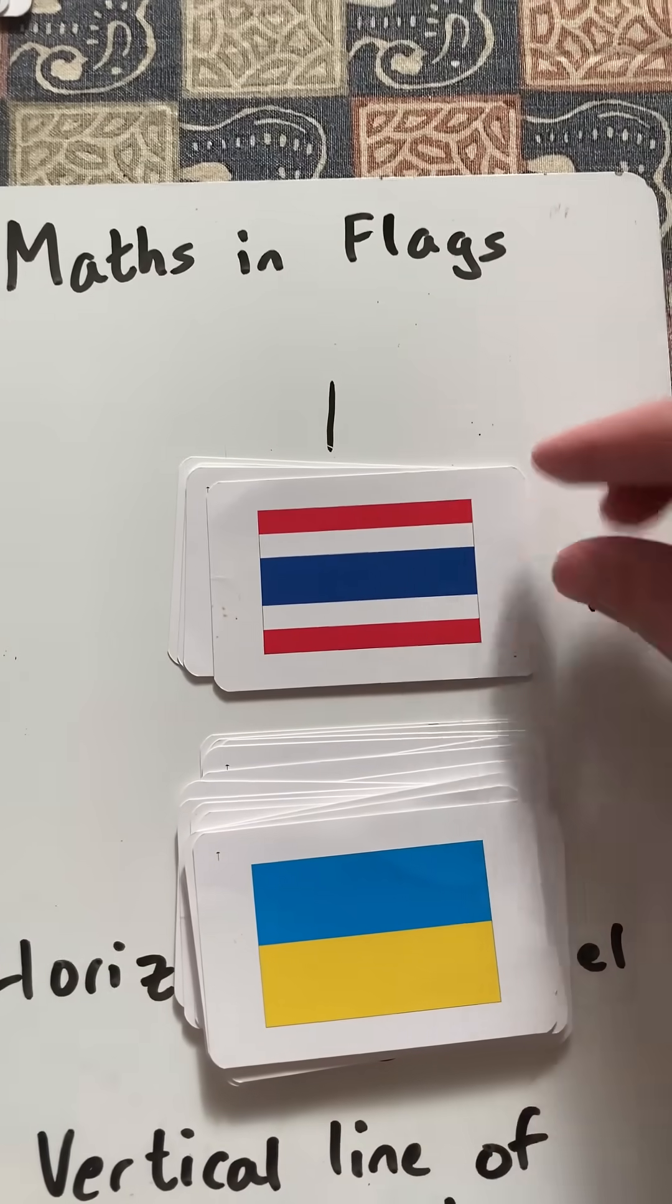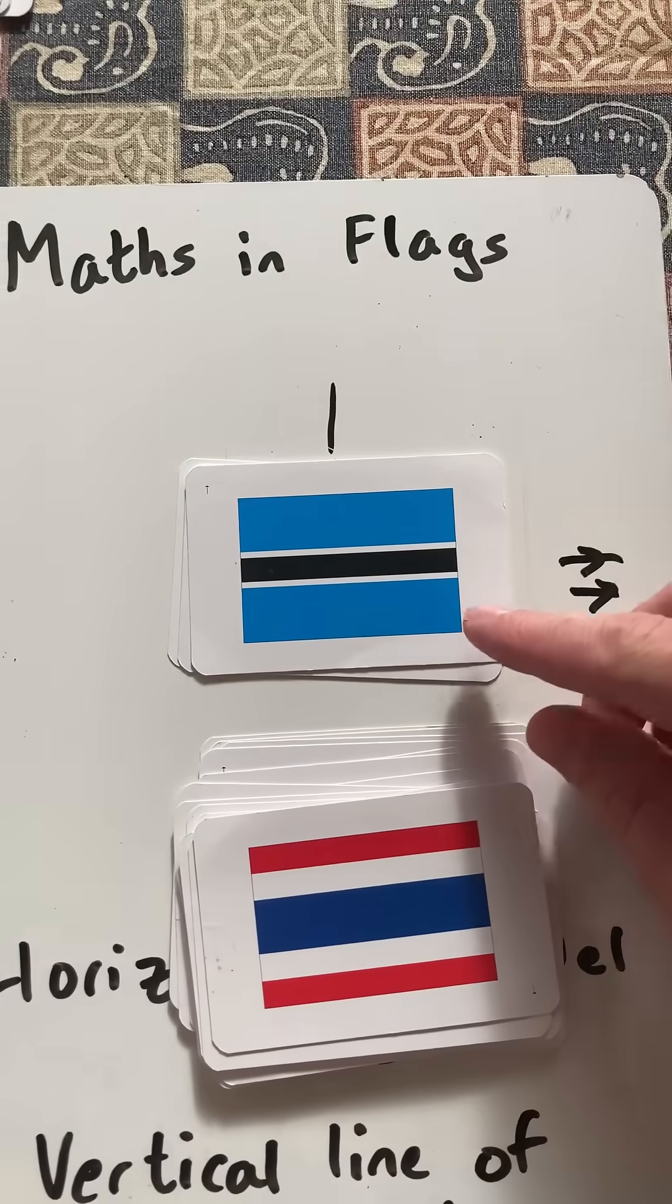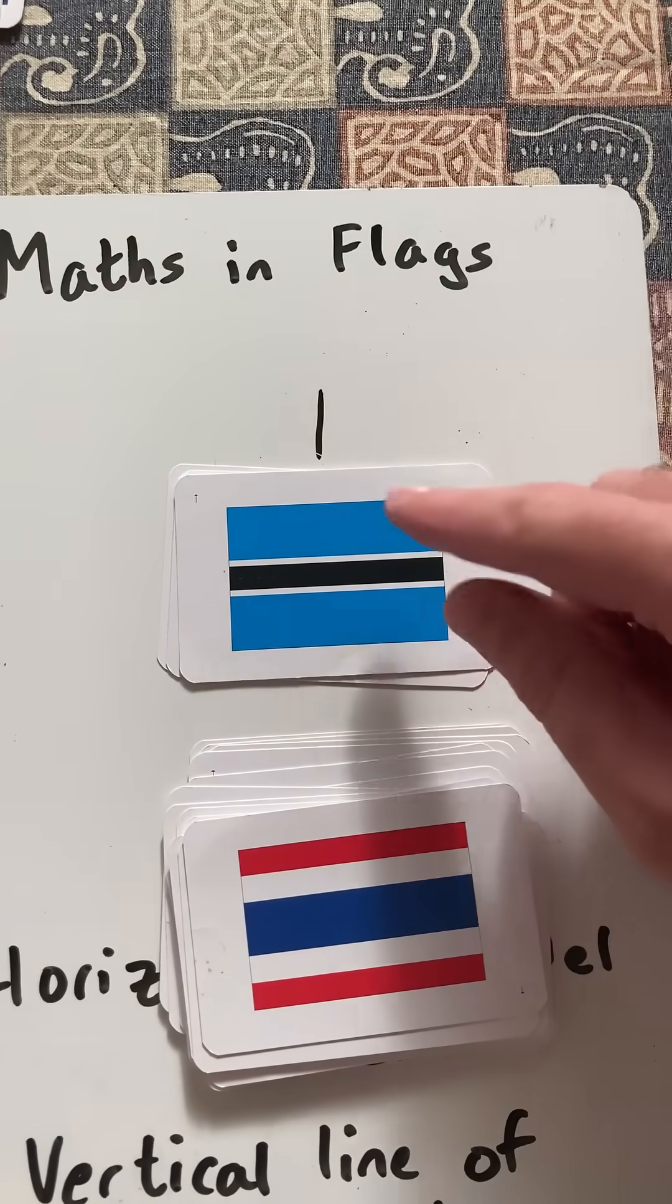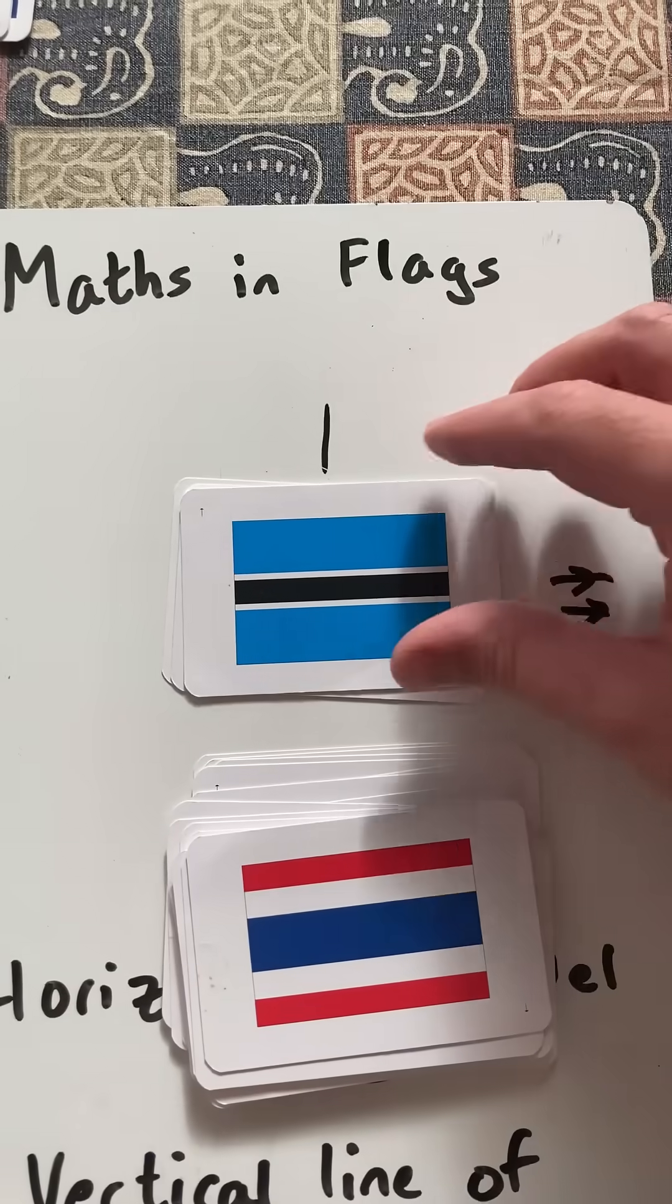These flags have more than three sections, including Thailand, Botswana, where they have both vertical and horizontal symmetry, as well as the horizontal parallel lines.